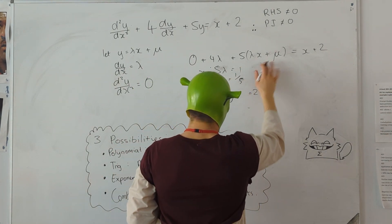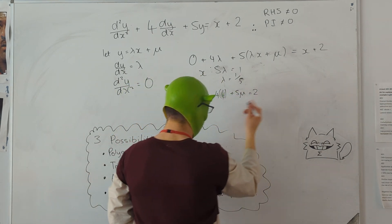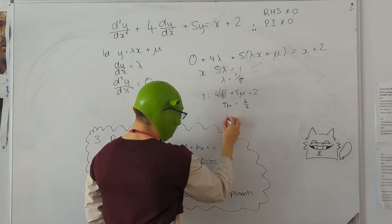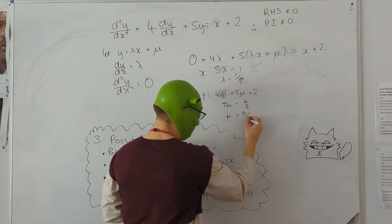And we know that we've got two on that side, so we've got four lambda. We know that lambda is one fifth, so we might as well put that in now. And we've got five mu equals two. Now four over five, we can subtract that, and then we can divide both sides by five. So we get mu equals six over 25.